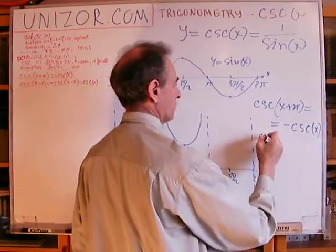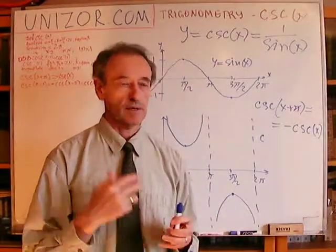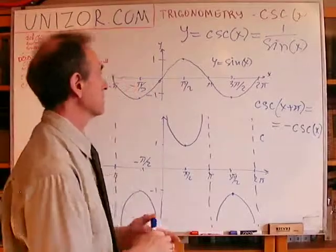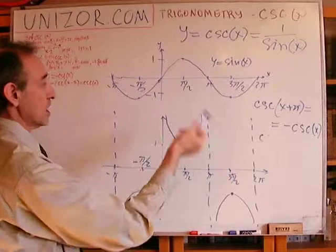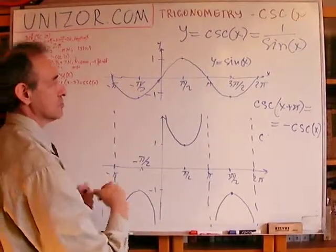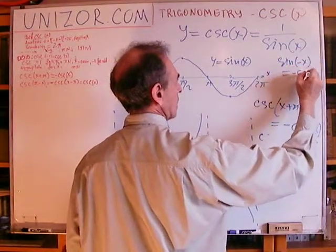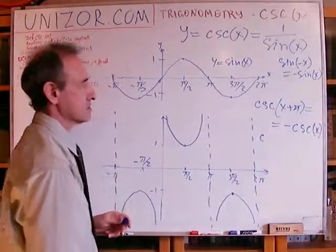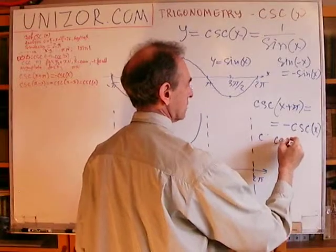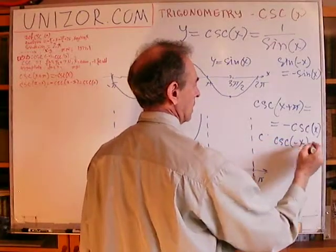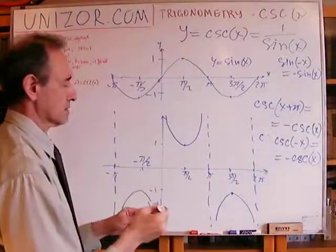If you consider sine as a function, it's an odd function. Sine is an odd function. It's symmetrical relative to this point and it changes the sign if the argument changes the sign. We were talking about this. Obviously, this is transferred to cosecant. So csc(-x) = -csc(x) because of the same property, because cosecant is 1 over sine.